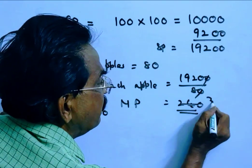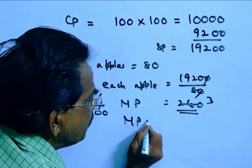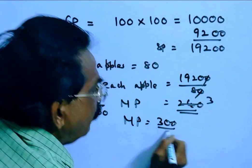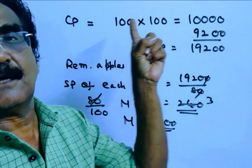240 divided by 80 is 3, times 100 equals 300. Market price is 300 rupees, cost price is 100.